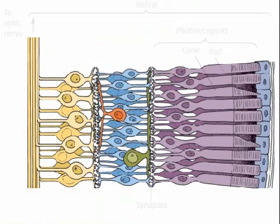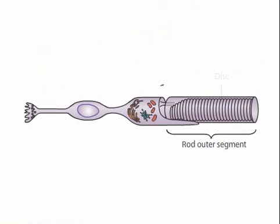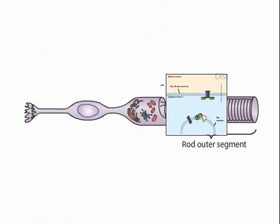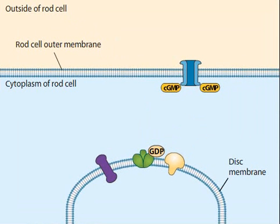Each rod has an outer segment packed with membranous discs. The disc membranes are stacked inside the rod cell outer membrane. In addition to rhodopsin molecules, the disc membranes carry G proteins, also called transducin,